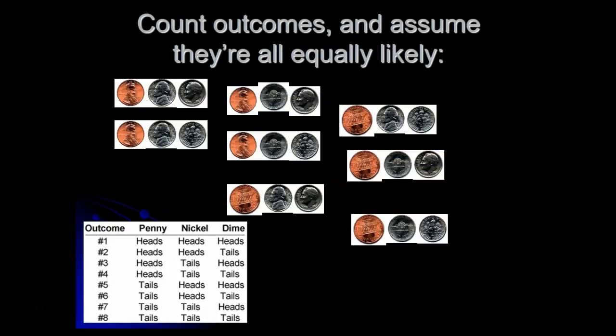Another approach would be to count all the different ways that the three coins could come up. And this is easier to visualize if they're three different coins. So imagine you've got a penny and a nickel and a dime. And then there's eight different ways that those three coins could land. They could all three come up heads, which is what we were talking about.